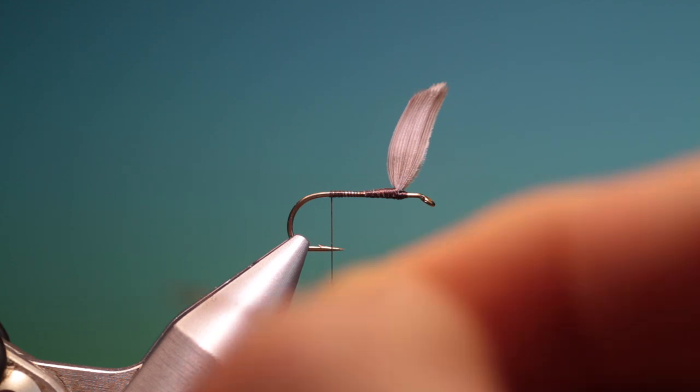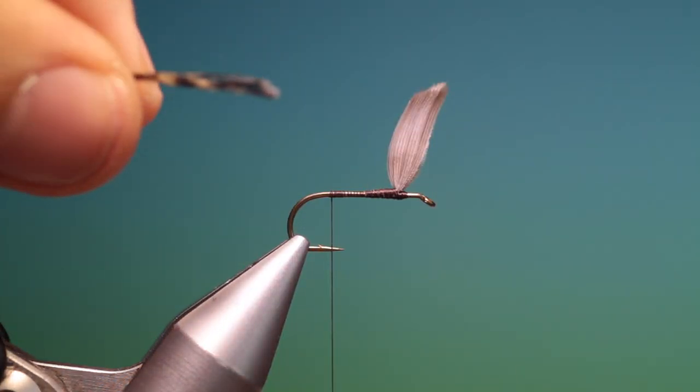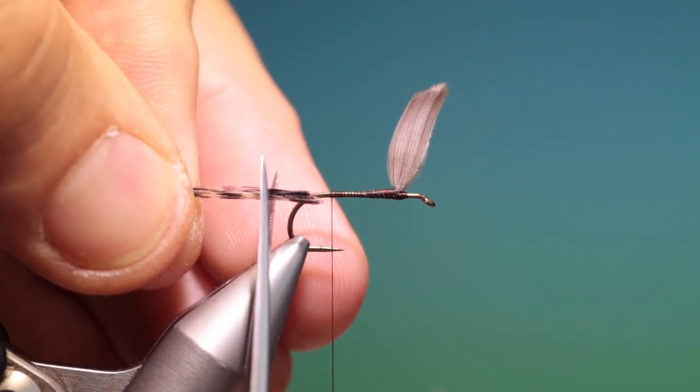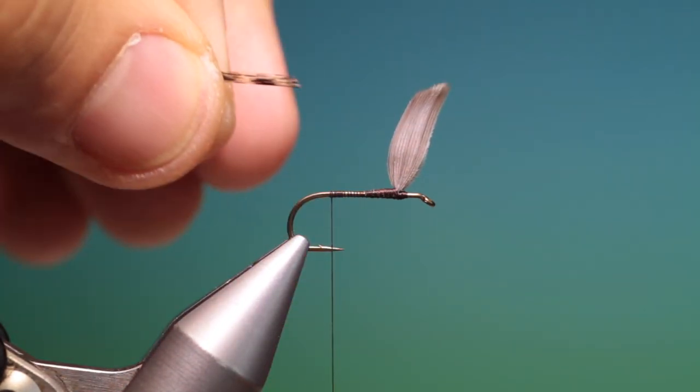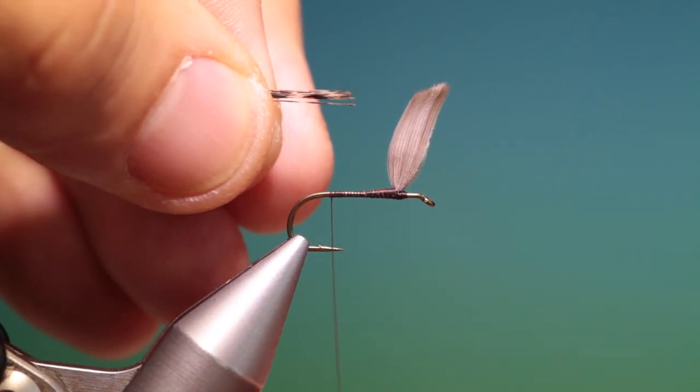We'll just pull a bunch of fibres out like that. And put them together for the tail. Now we don't want these fluffy bits at the ends here. So we get rid of those. We want quite a long tail on this. I just want to flatten my thread.